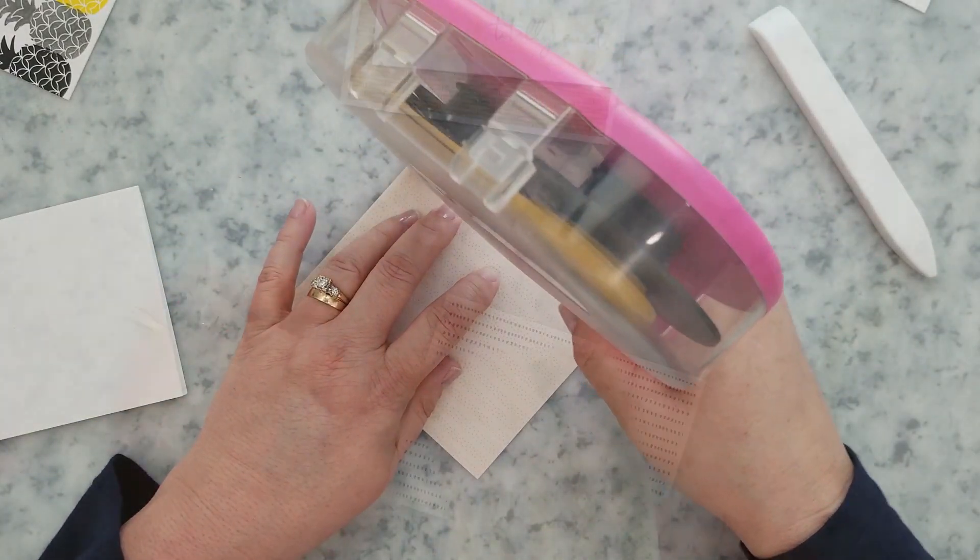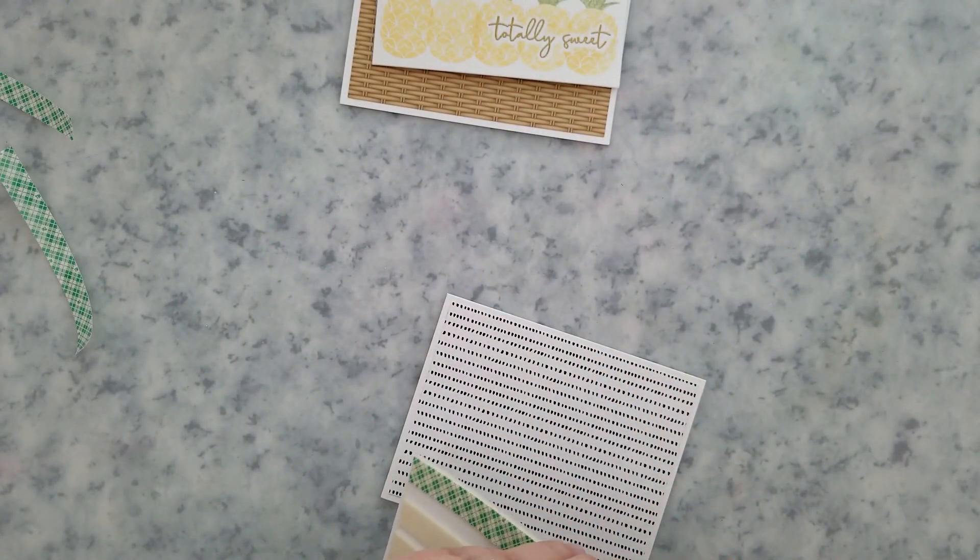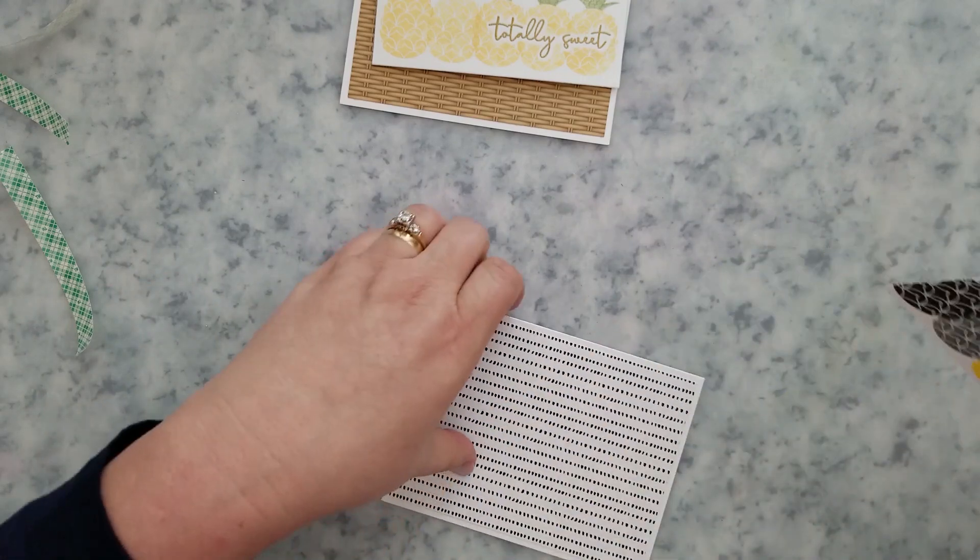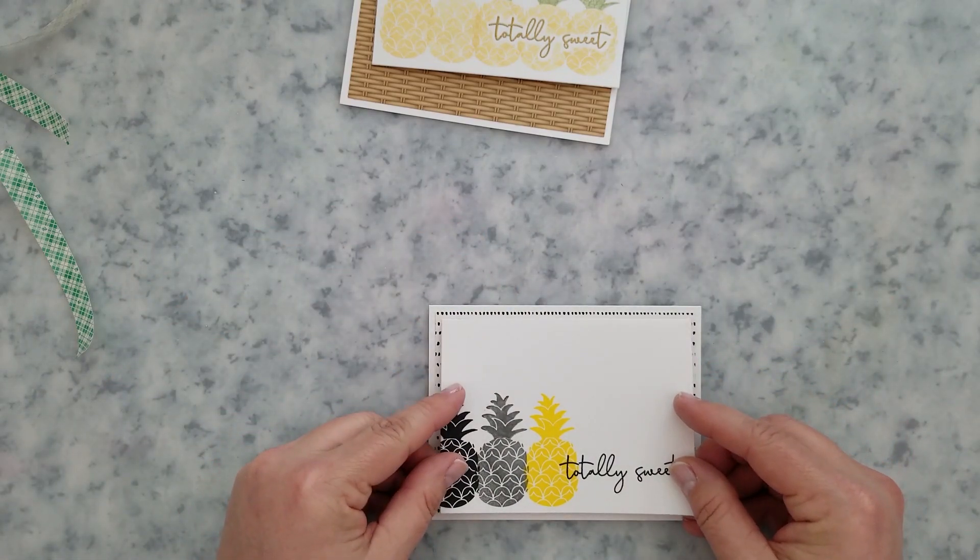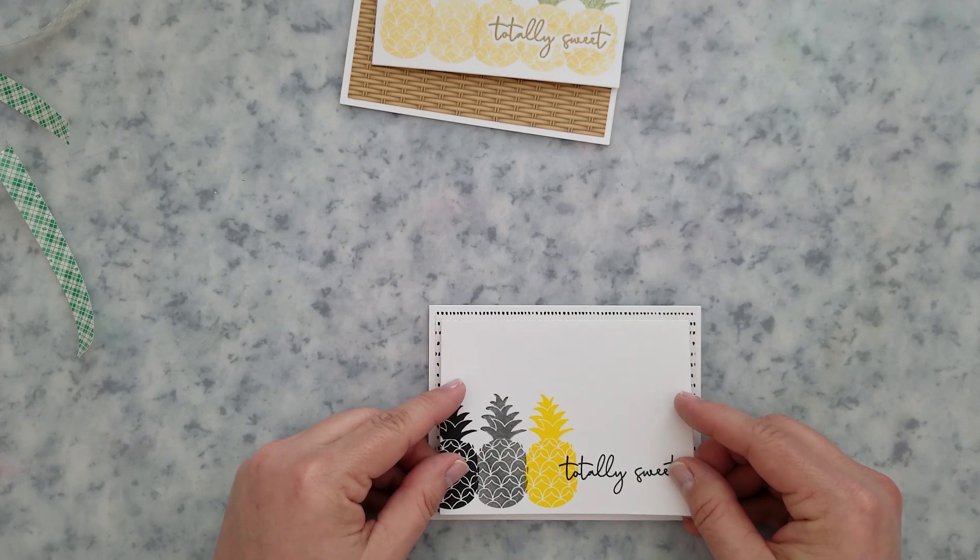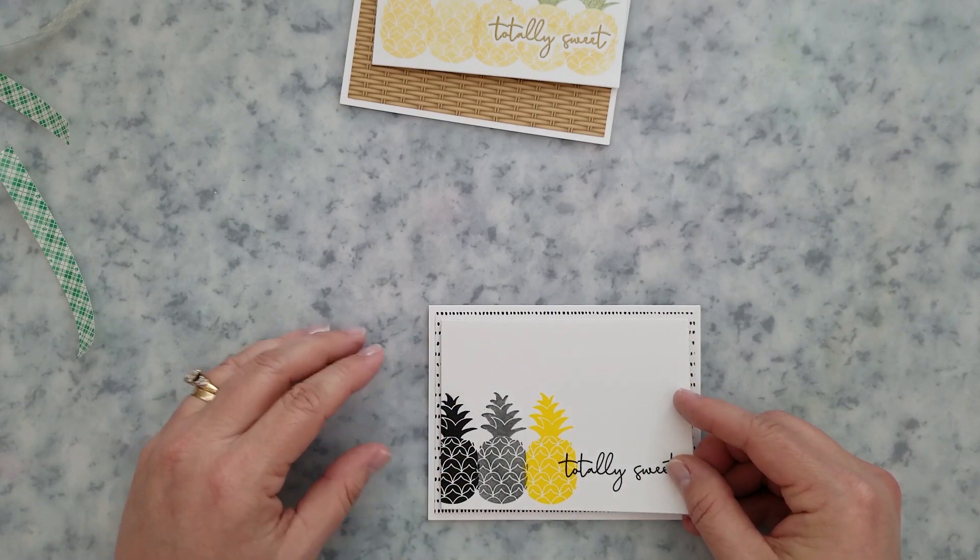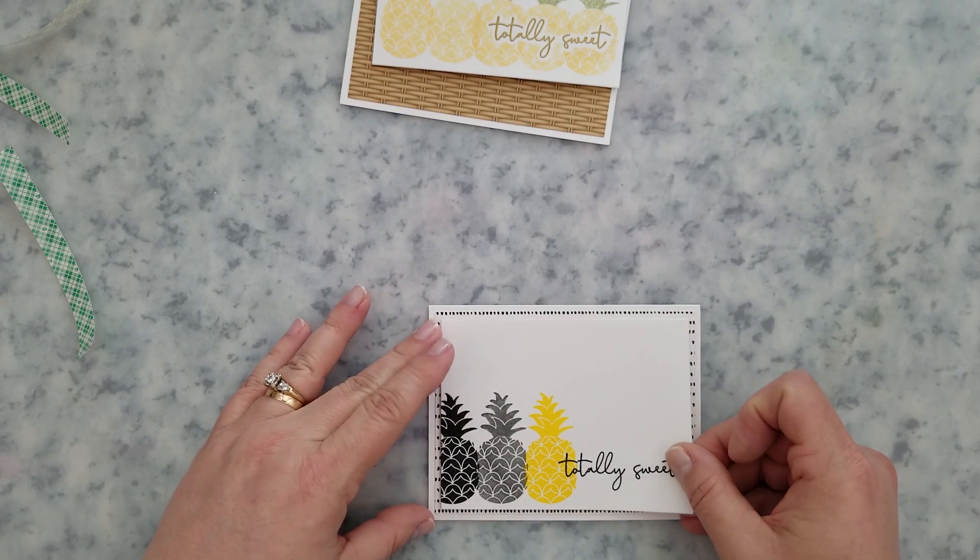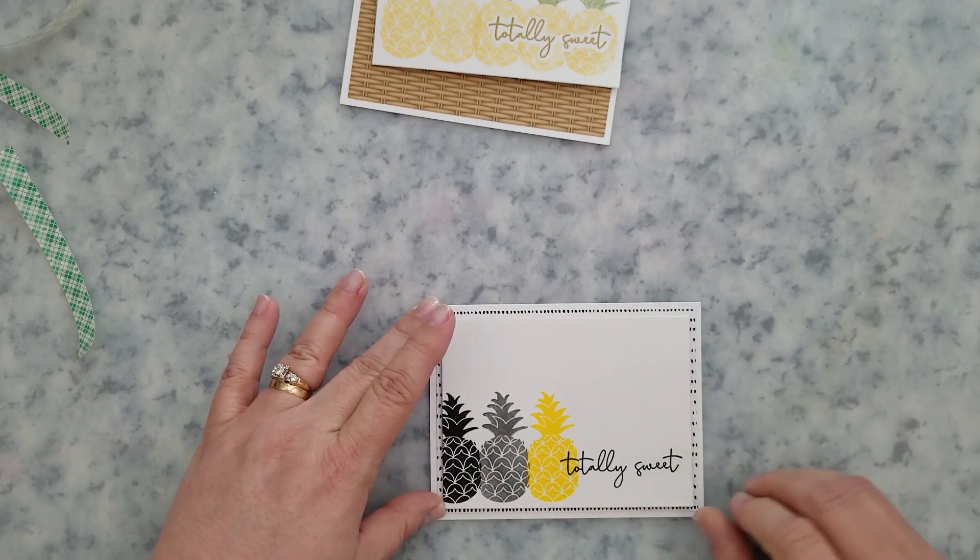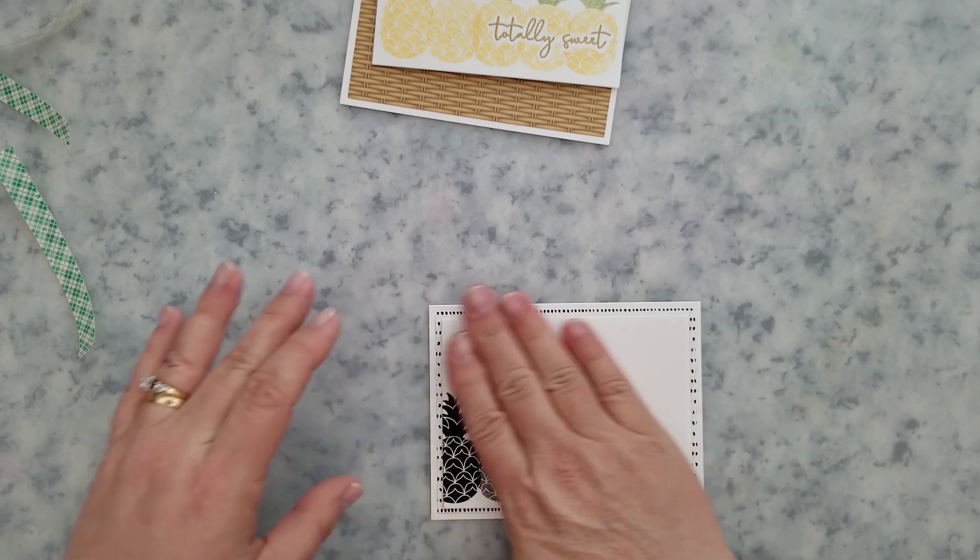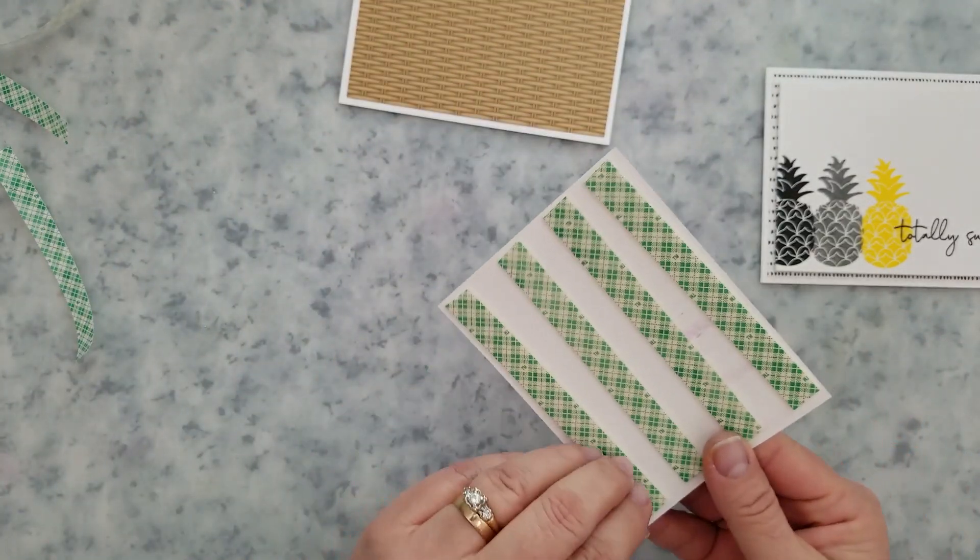I trimmed pattern paper on the panels of my card with my tape gun, get my thoughts together here. Once I have the pattern paper centered on the A2 cards, I'm going to add mounting foam to the back of these stamped panels and go ahead and center those over the pattern paper.